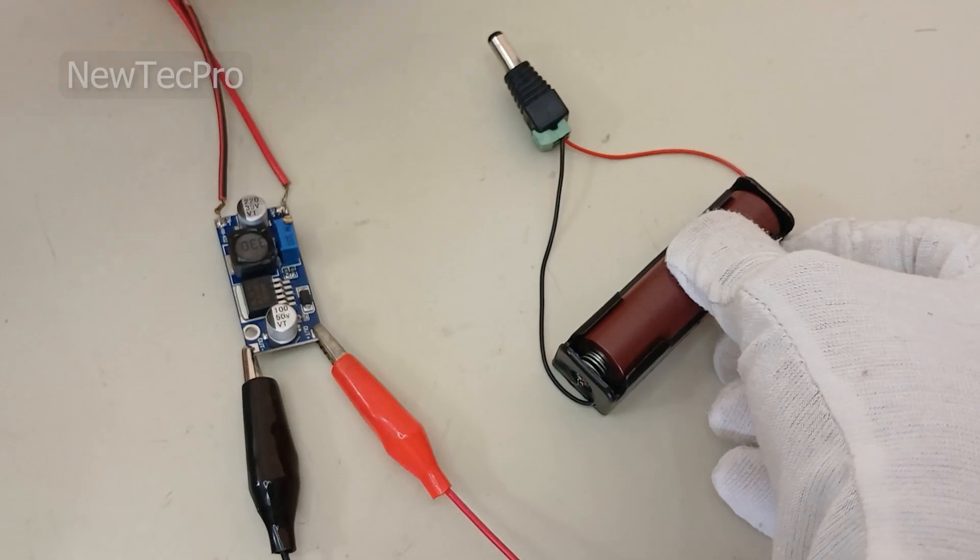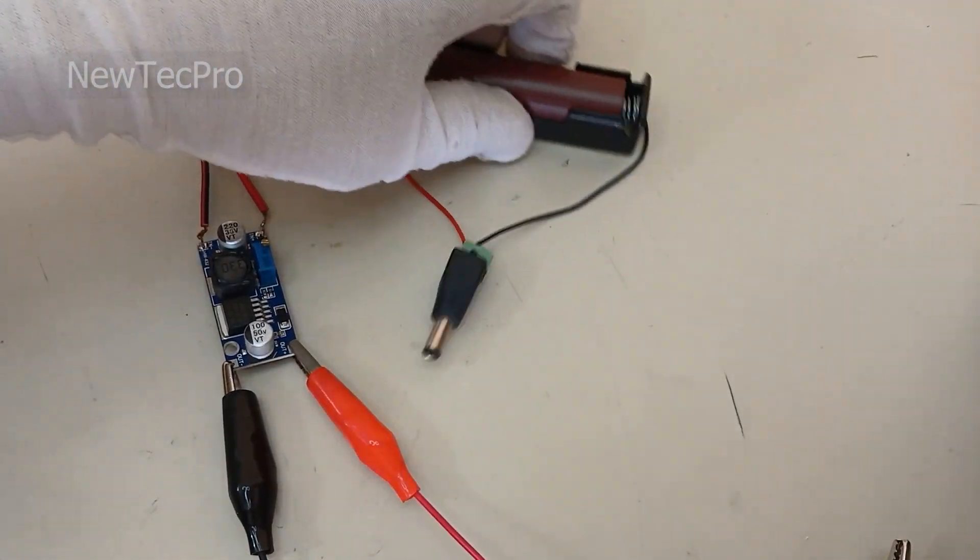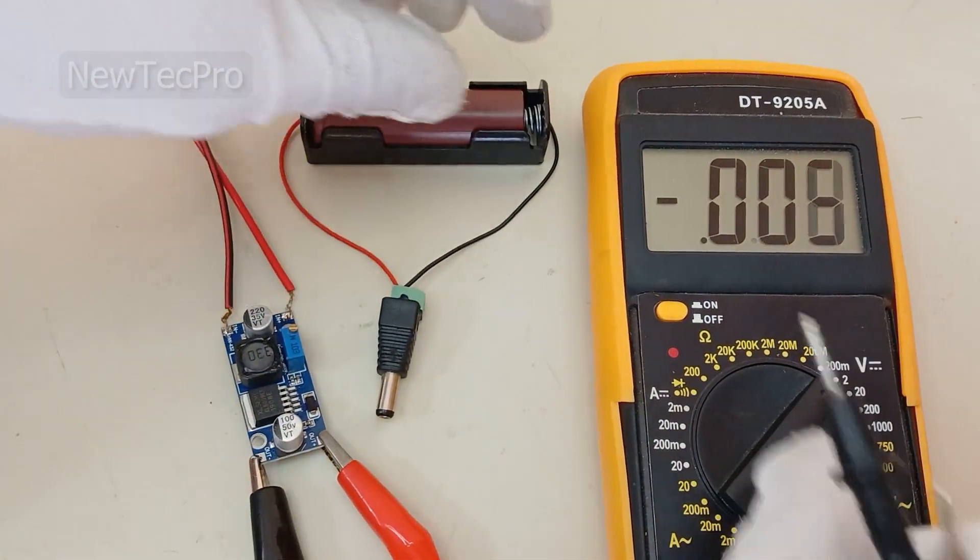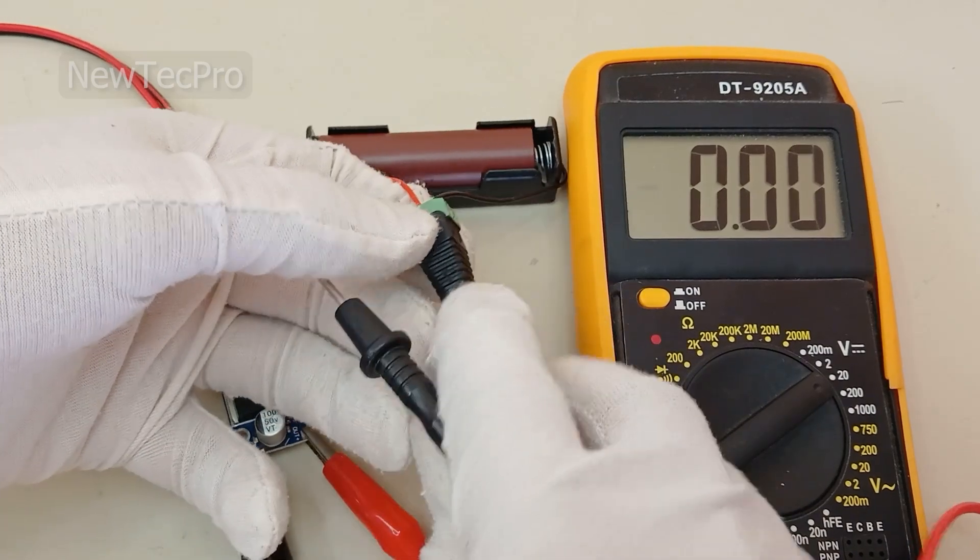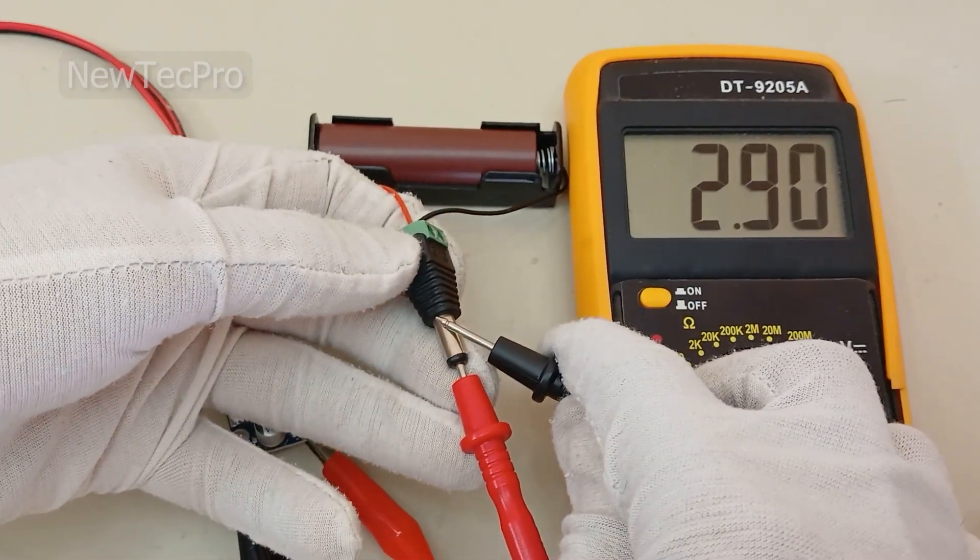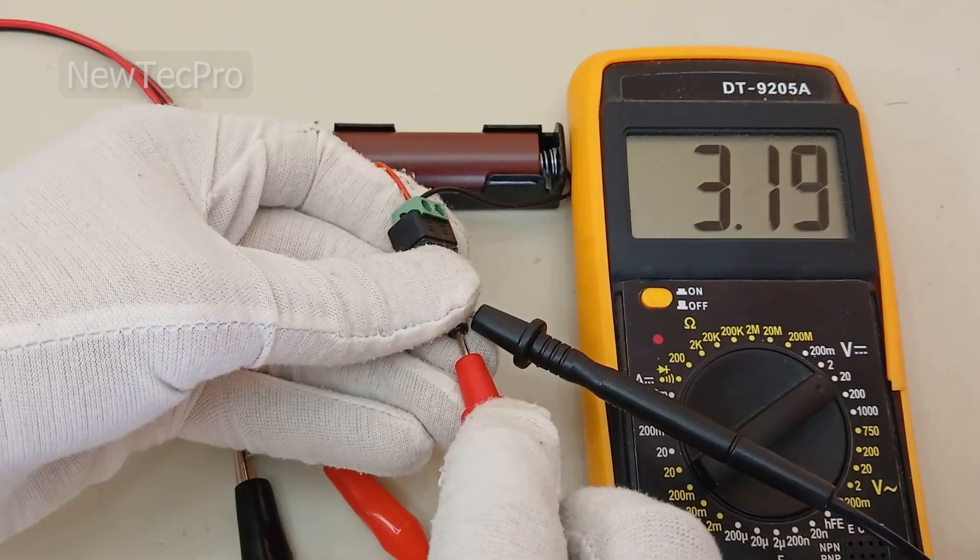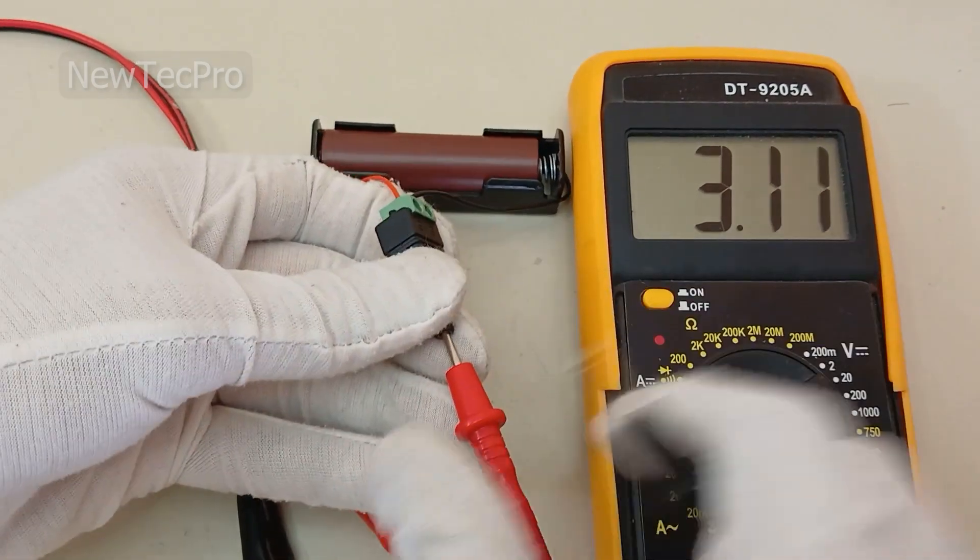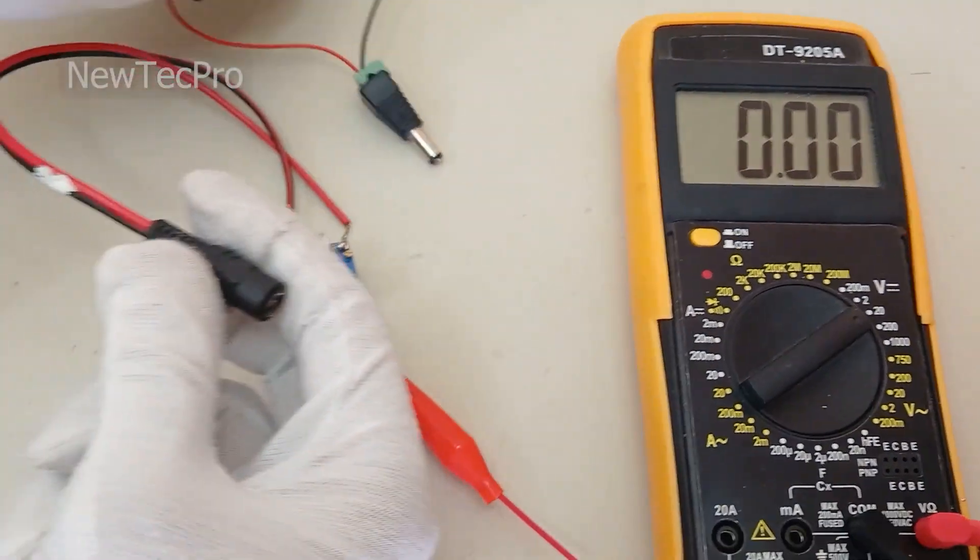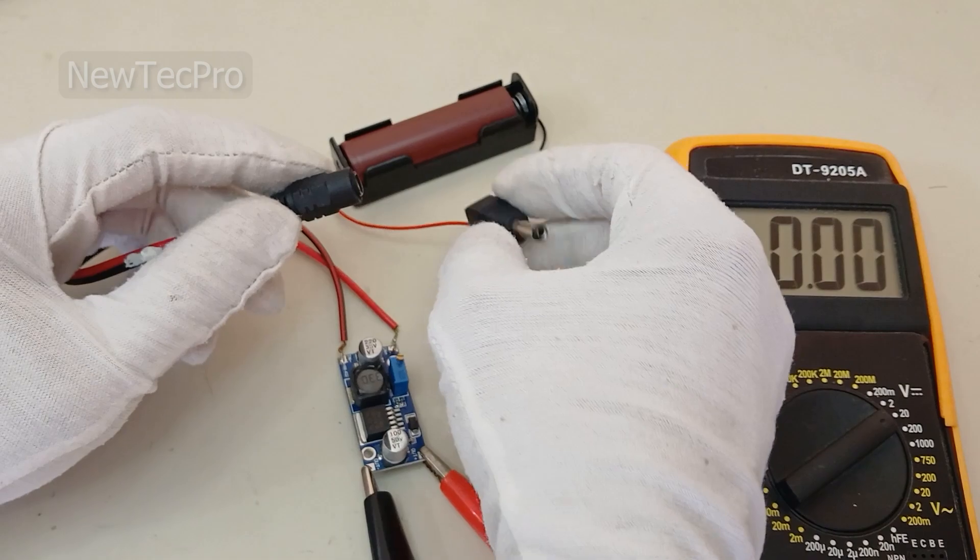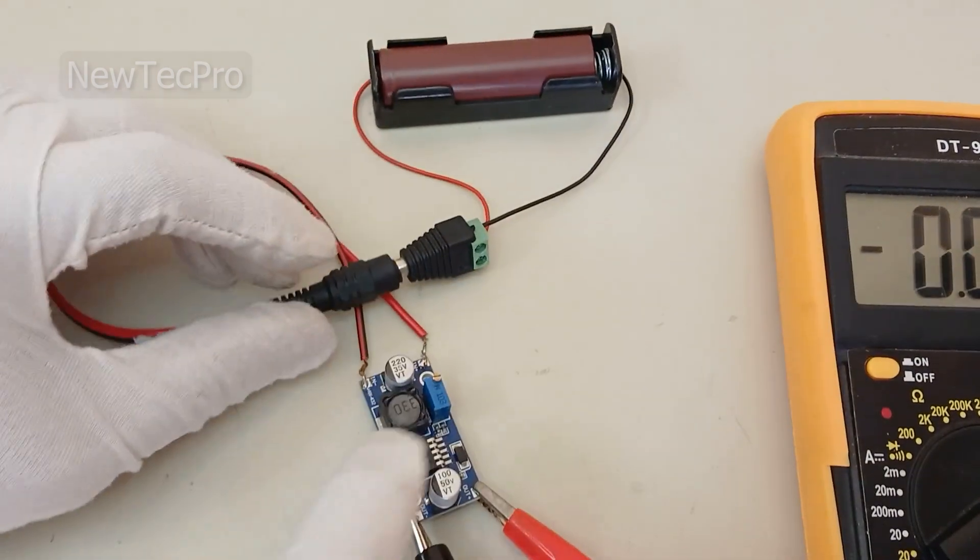Okay, that's good. I'll try measuring the battery output. As you can see, it's 3 volts battery output. Now I'll connect the battery output to the input of the step-up module and measure.